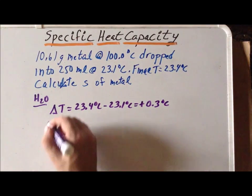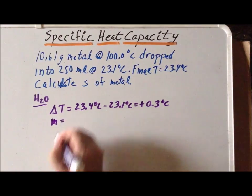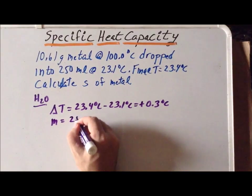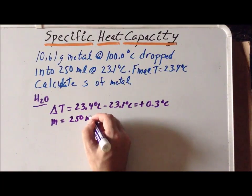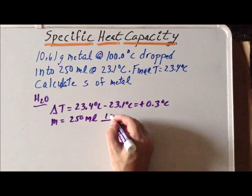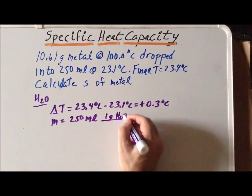The second thing we want to look at is to define the mass of the water. While we know its volume is 250 milliliters, we also recall that the density of water is almost exactly 1 gram per milliliter.